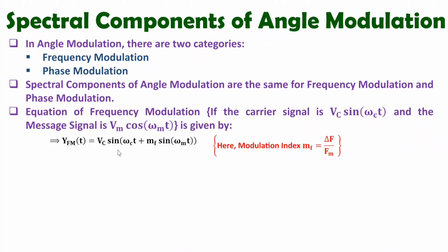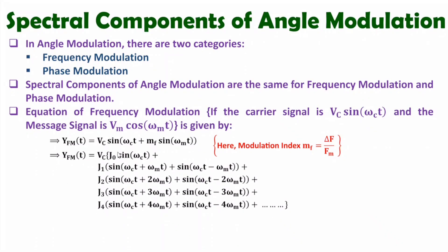To identify spectral components, you need to understand Bessel's function. Based on Bessel's function, this FM equation can be elaborated into an expanded form. Here Vc is common throughout. The entire term sin(ωct + Mf sin(ωmt)) is expressed as an algebraic sum of Bessel's coefficients. The first coefficient J0 is associated with the carrier sin(ωct), followed by an algebraic sum of the first, second, third, and fourth sidebands.